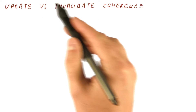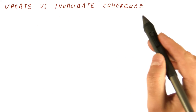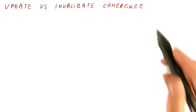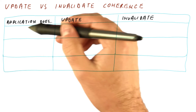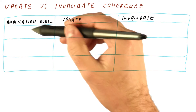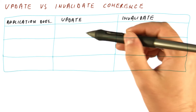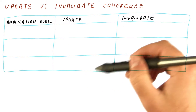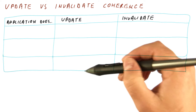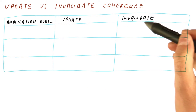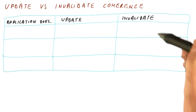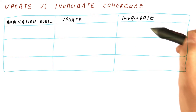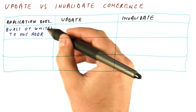Let's compare update and invalidate coherence approaches. We will compare them for different things that applications often do. Here we will say what the update protocols are going to do, and here's what an invalidate protocol is going to do.